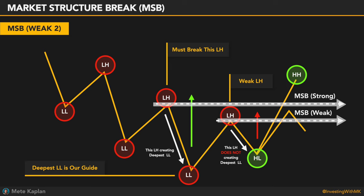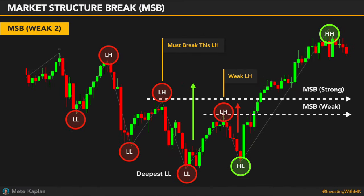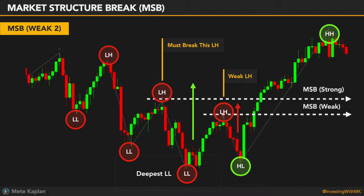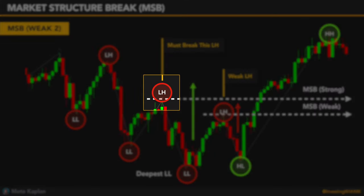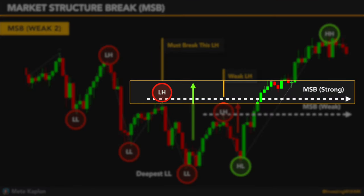Again, to be a valid and strong MSB, it should break the lower high which creates the deepest lower low. Let's see an example. Can you identify the deepest lower low? Yes, this one. Which lower high creates that lower low? Yes, here it is. So we have to break this one for a stronger and more trustable MSB.